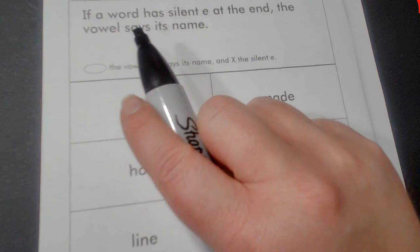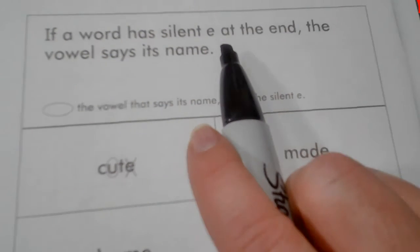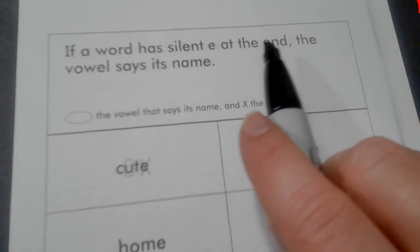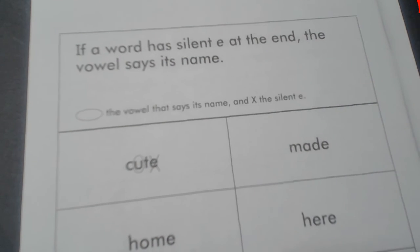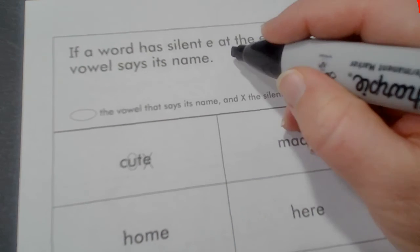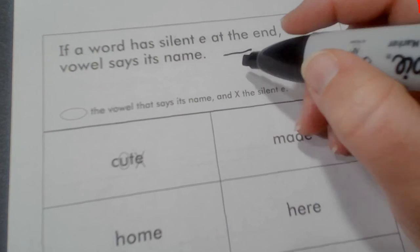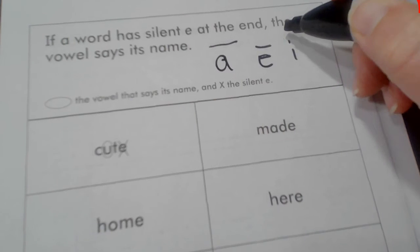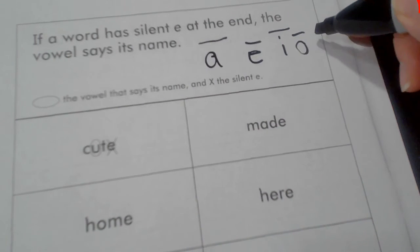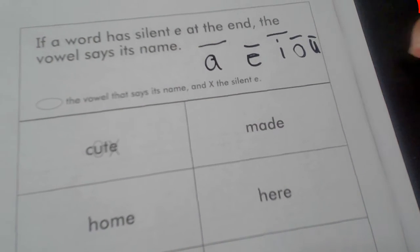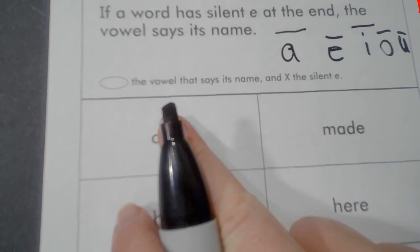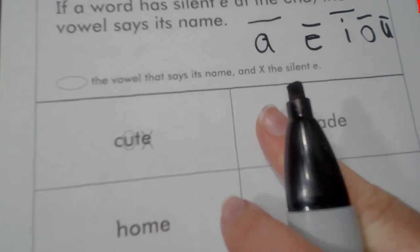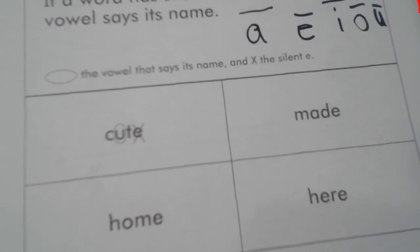It says if a word has a silent E at the end, the vowel says its name. It changes the breve into a macron for the A or the E or the I or the O or the U. We'll circle the vowel that says its name and X the silent E.